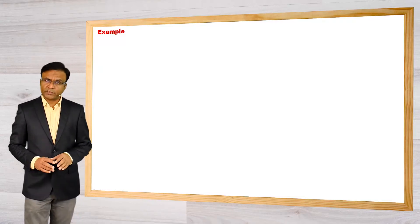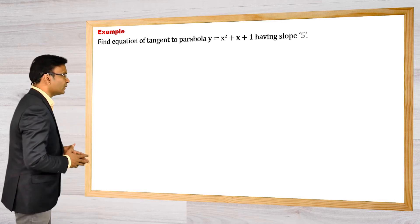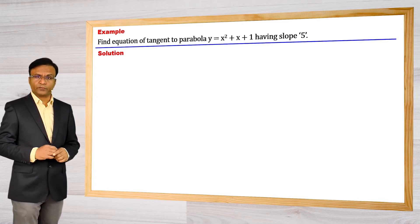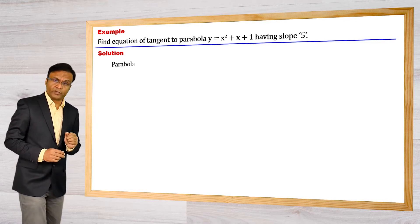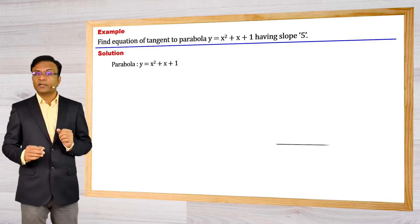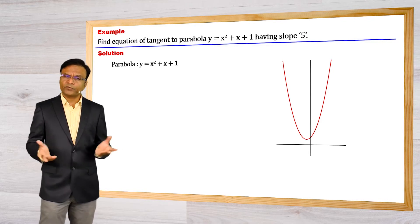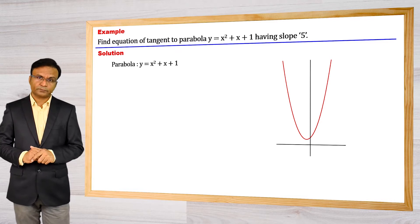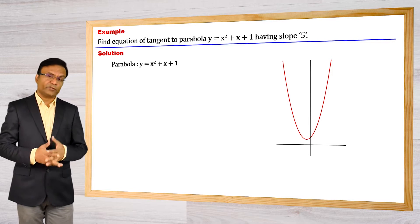Let us try one more question based on this category. This time we have parabola y is equal to x square plus x plus 1. We have to find the equation of tangent to this parabola having slope 5. Now, this given equation of parabola is not the standard equation of parabola, so we do not have any standard equation of tangent. So how do we get the equation of tangent?